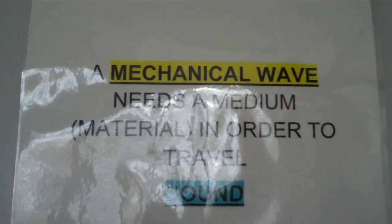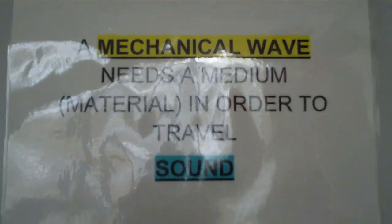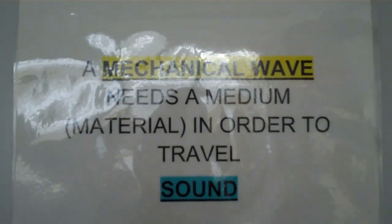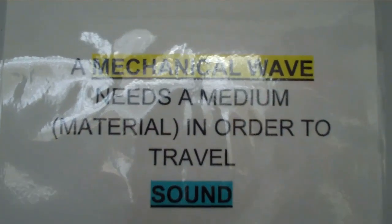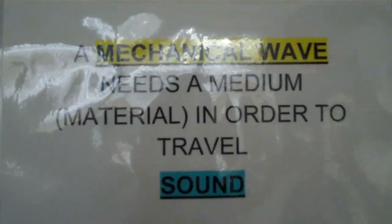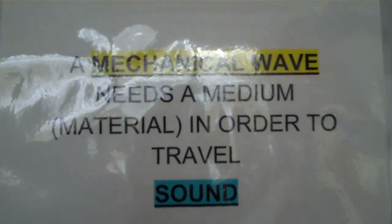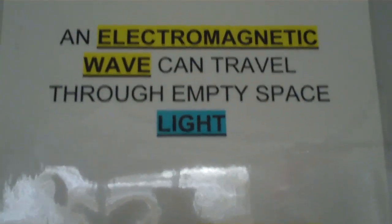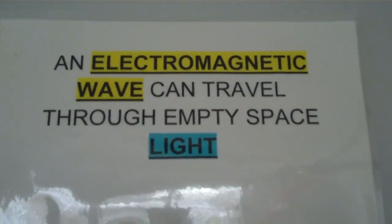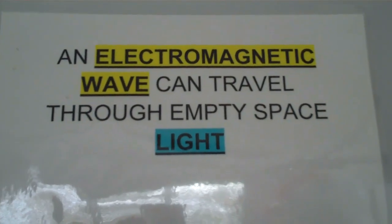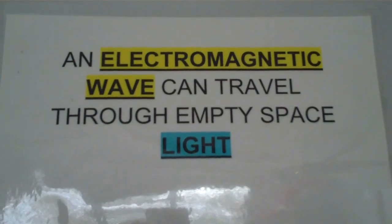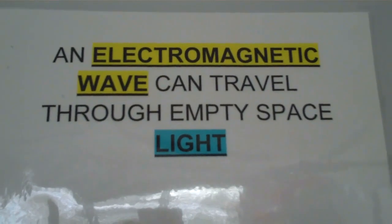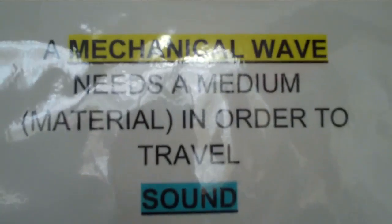I'm not sure you can read this, but a mechanical wave needs a medium or some sort of material in order to travel. Sound is a mechanical wave. It needs, for example, air to travel through. Whereas light and all the electromagnetic spectral waves such as radio waves, x-rays, they can travel through empty space. They're called electromagnetic waves as opposed to mechanical waves.